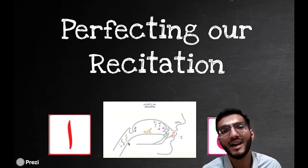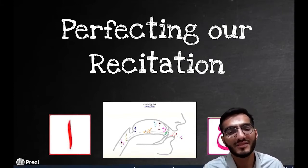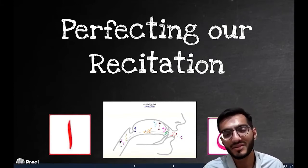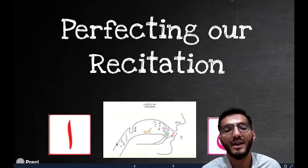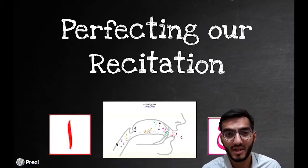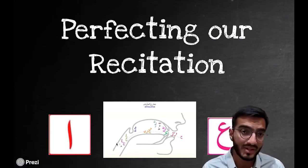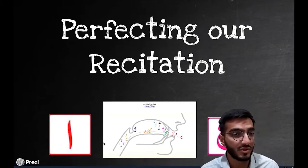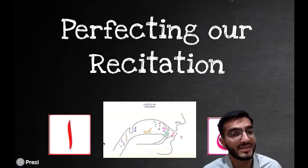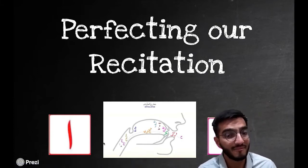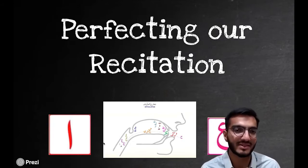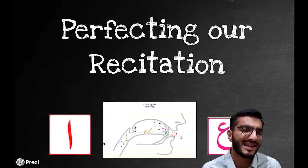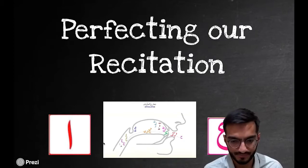Alif from the bottom part of the throat is nice and simple — 'A'. Remember, we should not overpronounce it. We should not overpronounce 'A' to make it sound like 'Aa'. And the same for Ayn — we should not overpronounce it, otherwise it just sounds a bit odd and strange.